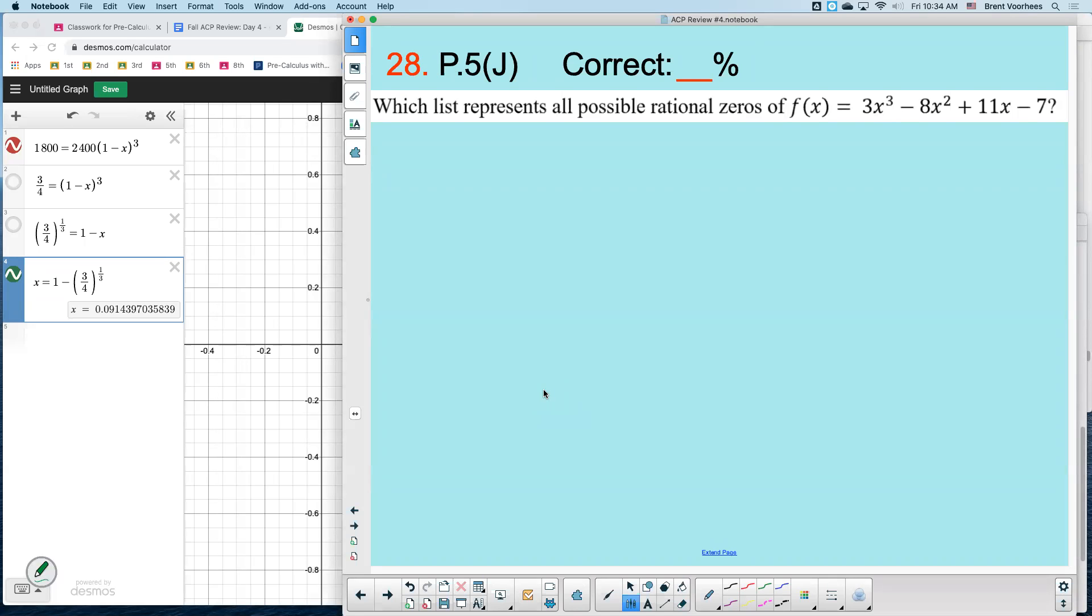All right, let's finish up this ACP exam. The last take here, 5J, which says which list represents all possible rational zeros of this equation. You might remember this from chapter two. This is when we had all those answers where the answers look like plus and minus a number, comma, plus and minus another number, plus and minus another number, so on and so forth.